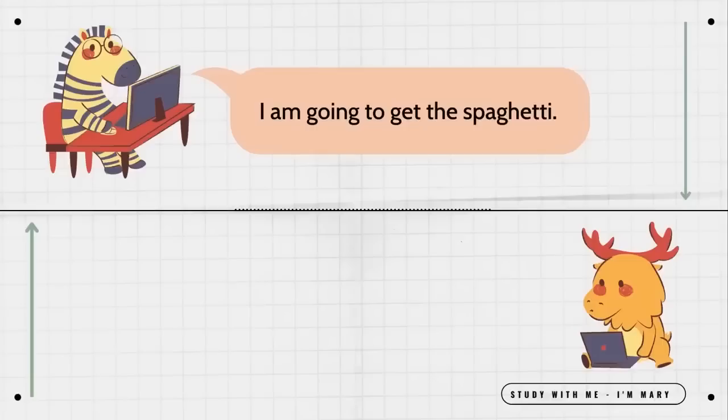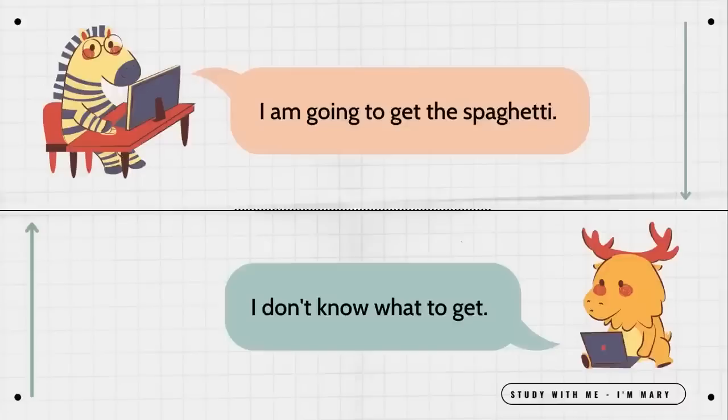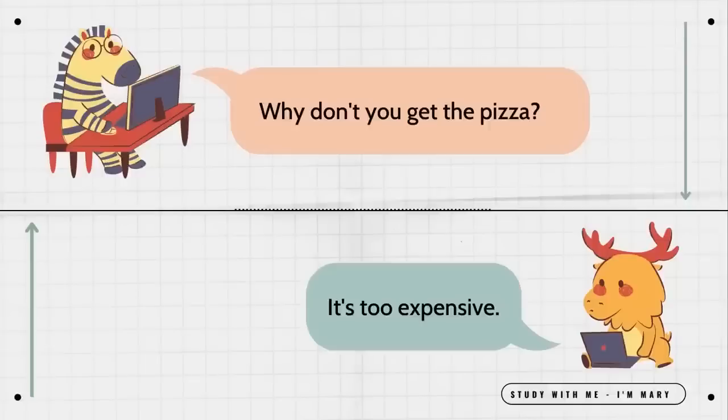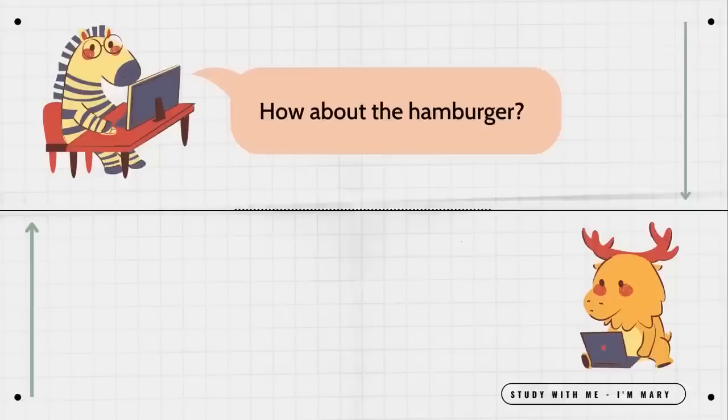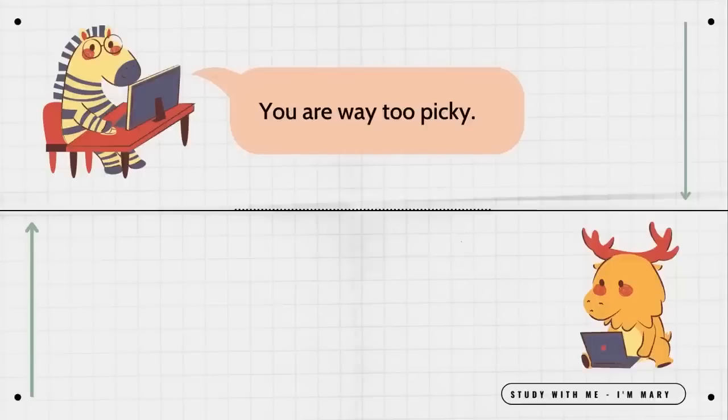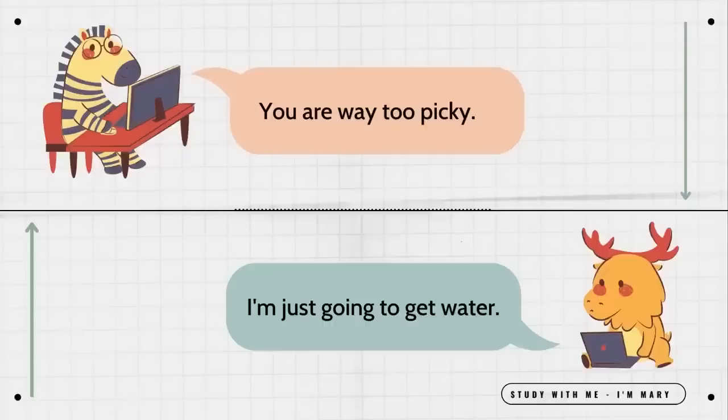I am going to get the spaghetti. I don't know what to get. Just pick whatever looks good. This is so hard. Why don't you get the pizza? It's too expensive. How about the hamburger? It's too fattening. How about the burrito? I hate Mexican food. You are way too picky. I'm just going to get water.